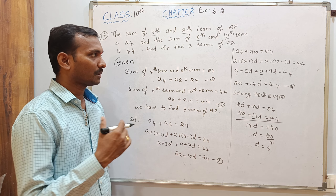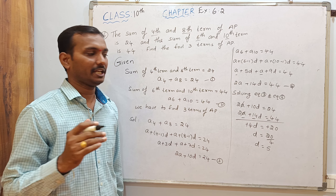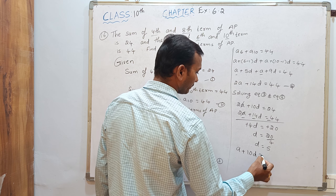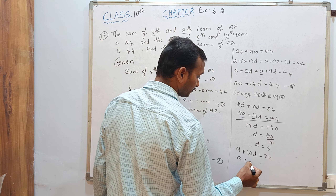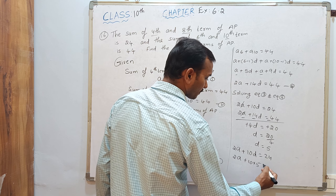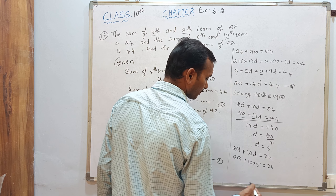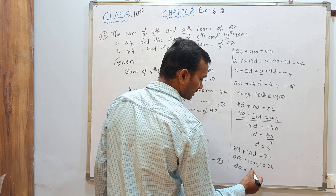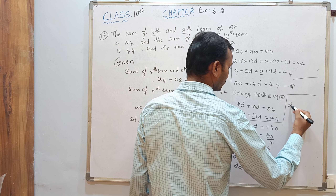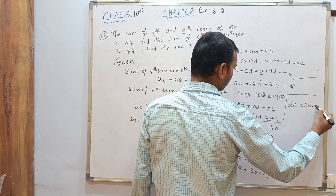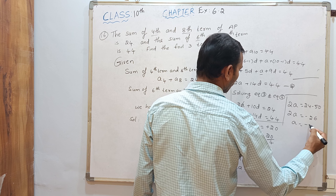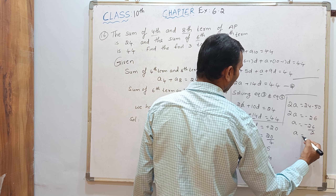After getting the D value, substitute it into any one equation to find A. Using equation 3: 2A plus 10D equals 24. Substituting D equals 5: 10 into 5 is 50, so 2A equals 24 minus 50, which is minus 26. Dividing by 2, we get A equals minus 13.